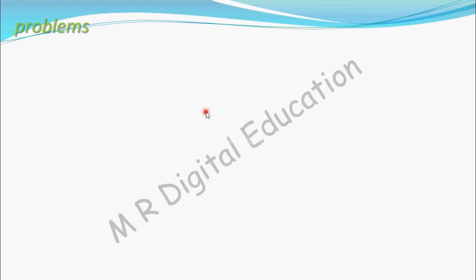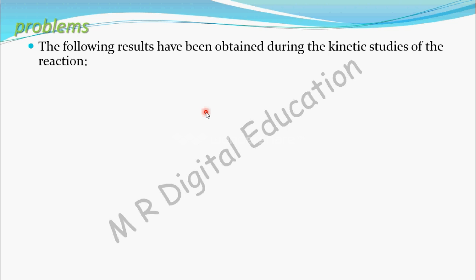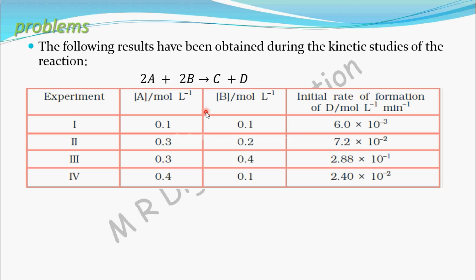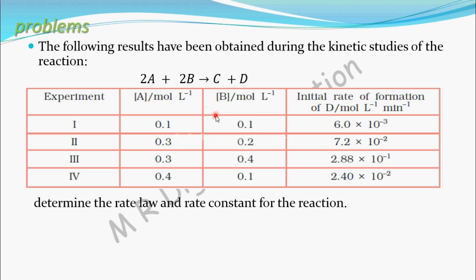Let's see a problem to determine rate law and rate constant. The following results have been obtained during the kinetic studies of the reaction: 2A plus 2B gives C plus D. A table of experimental results is given for this reaction. The experiment numbers are 1, 2, 3, and 4, with columns for concentration of reactant A, concentration of reactant B, and initial rate of formation of product D.